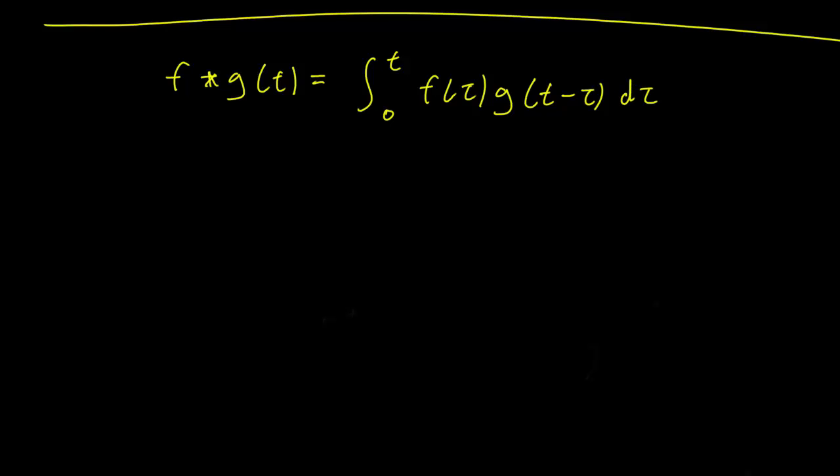So we define a product of f and g this way, and notice that this integral is a function of t. The t is in the upper limit of the integration. But this is an expression that depends on t, so it's a function of t.